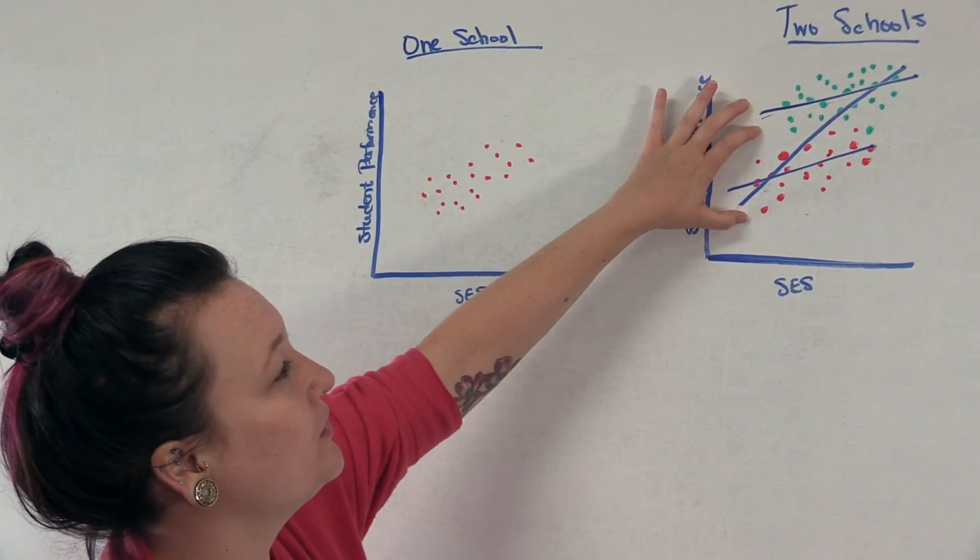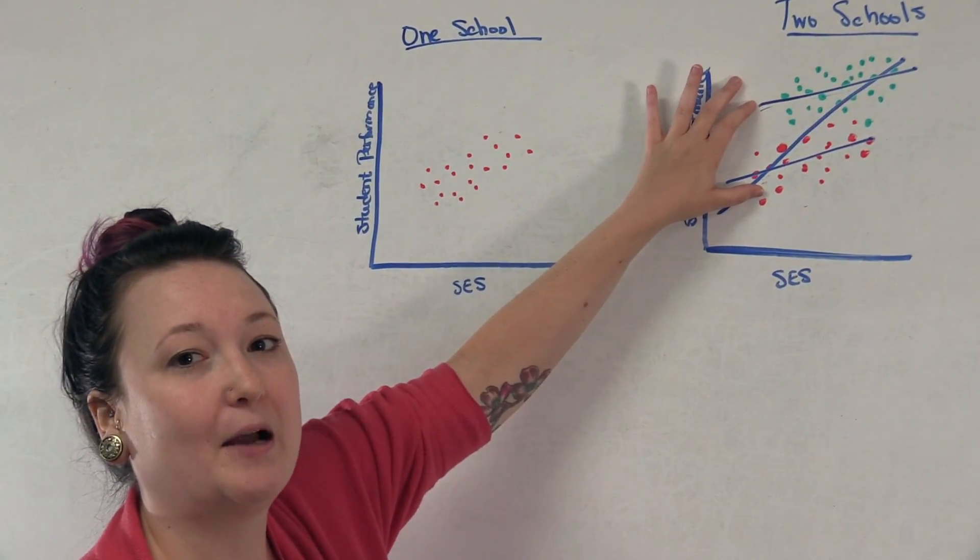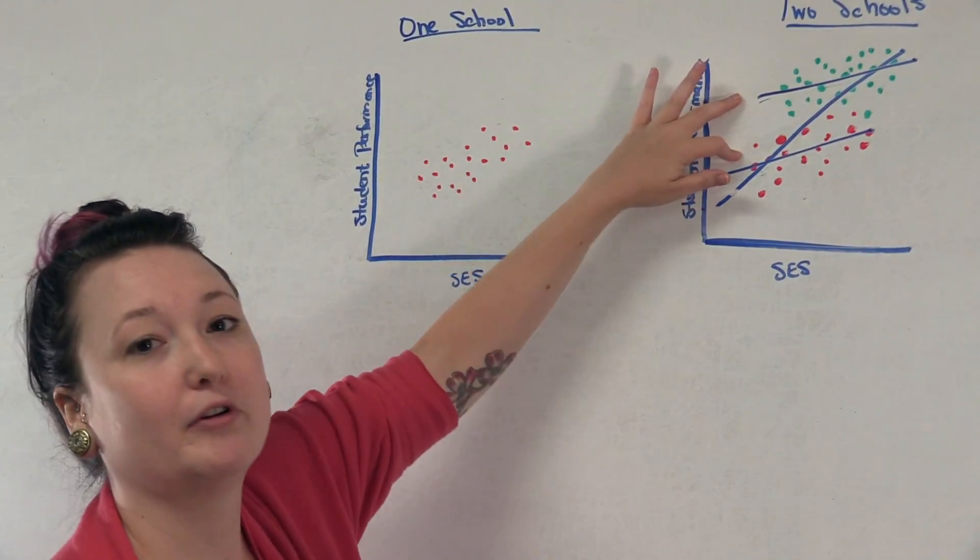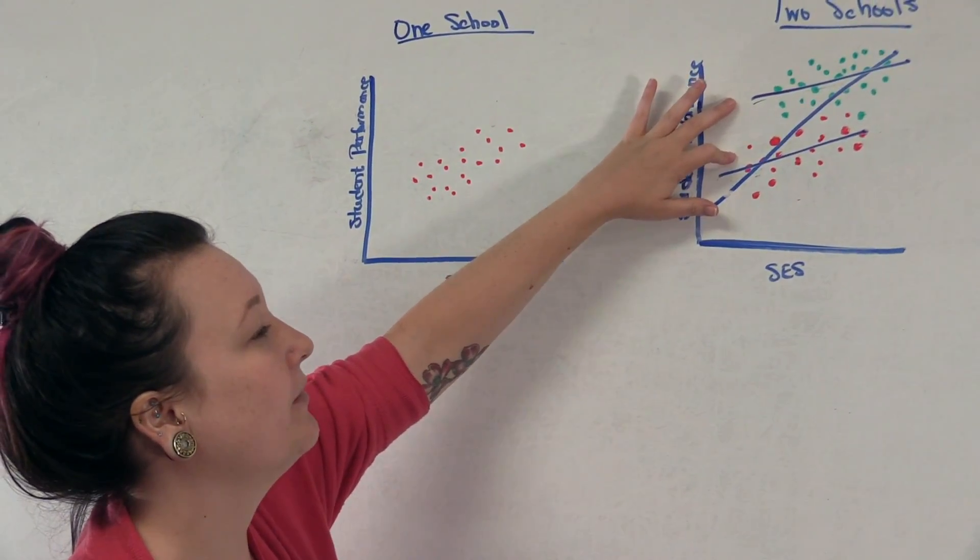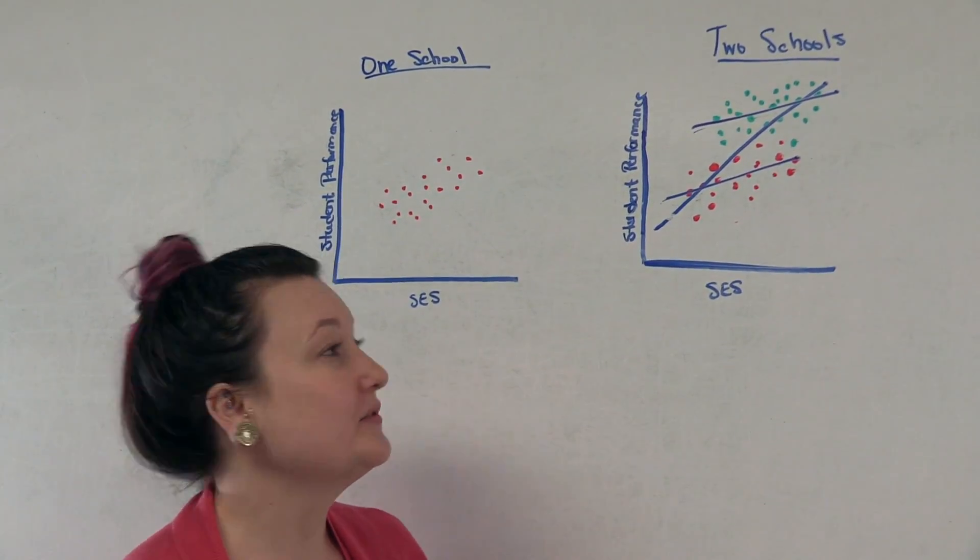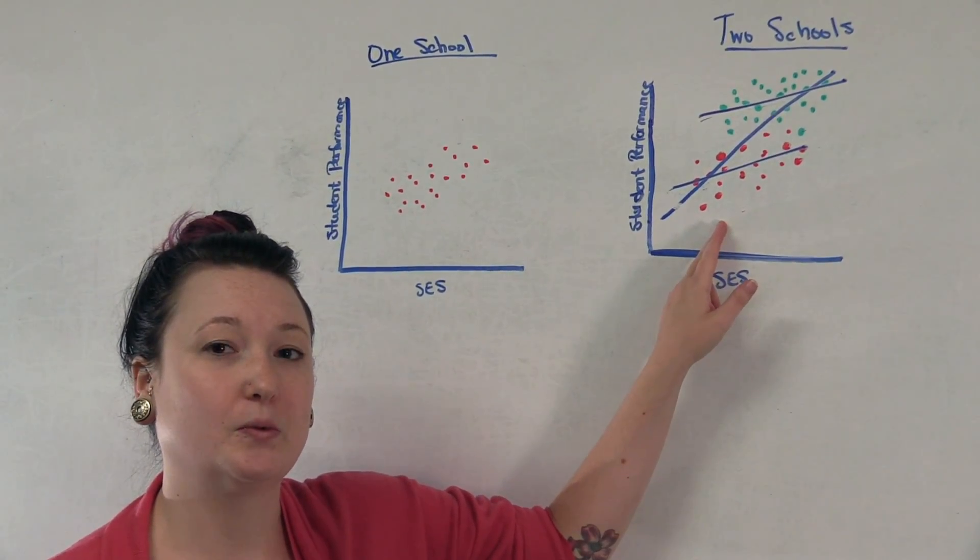Unfortunately, with only two schools, the best we can do is to model them separately, creating two separate regression lines such as what's presented here. And with a larger random sample of schools, we may want to model the differences between these two schools.